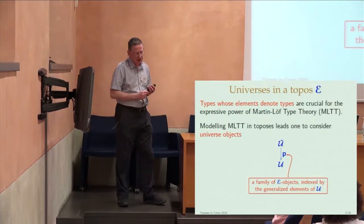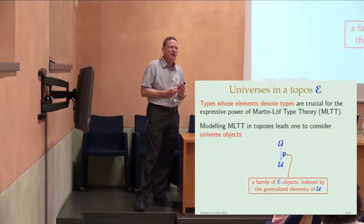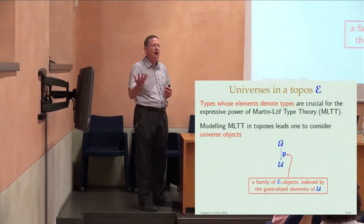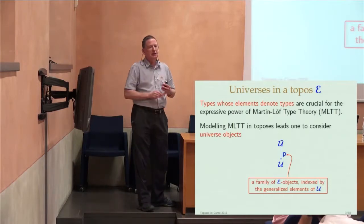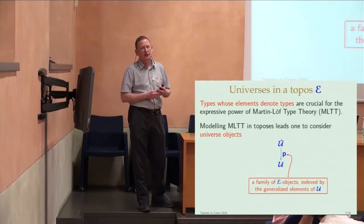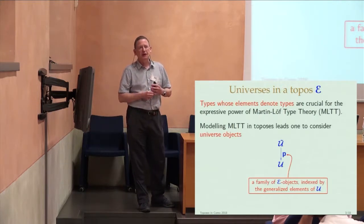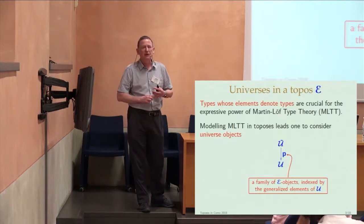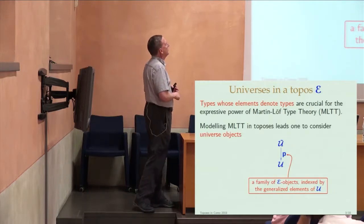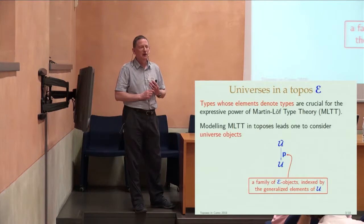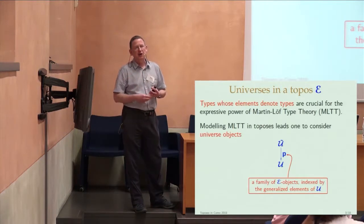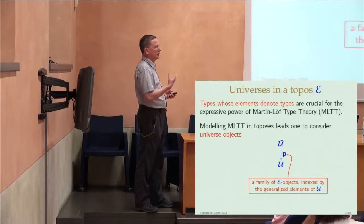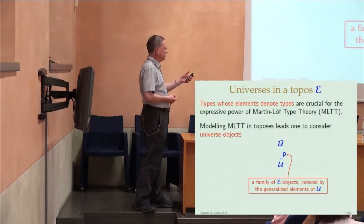We're talking about universes in the sense of type theory. A universe in type theory is a type whose elements denote types — a type of types in some way. They're absolutely crucial for Martin-Löf type theory: without universes, Martin-Löf type theory is logically very weak, but with universes you're able to express much more. When you give the semantics to type theory in a topos, a universe of types is going to be interpreted as some universe object.